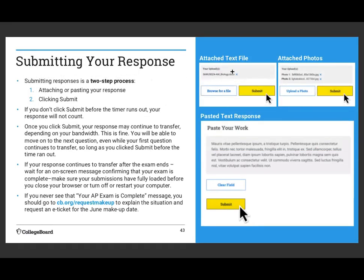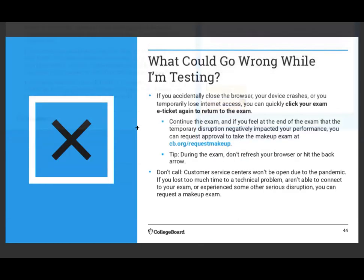You're either going to attach a file, attach a photo, or paste your work — there's no place to type directly into the exam. If you accidentally close the browser, your device crashes, or you temporarily lose internet access, quickly click your exam e-ticket again to return and continue. If a disruption negatively impacted your performance, you can request approval to take the June makeup exam. During the exam, don't refresh your browser, hit the back button, or call any customer service centers.